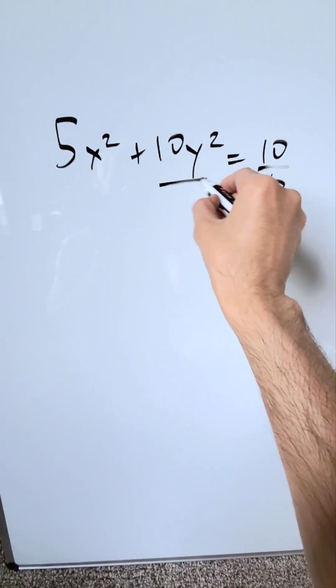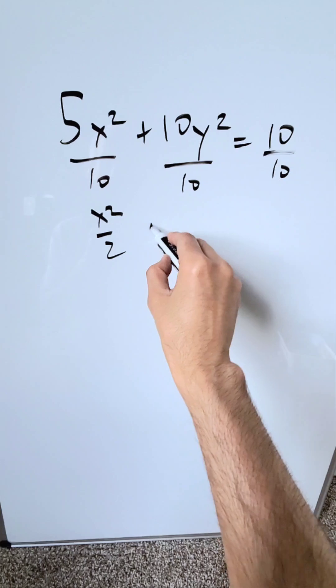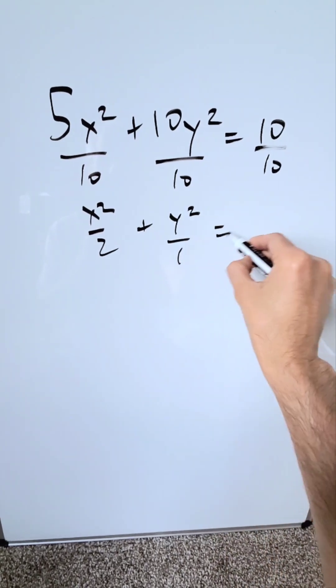If you divide everything across by 10, what are we looking at? x square over 2 plus y square over 1 is equal to 1.